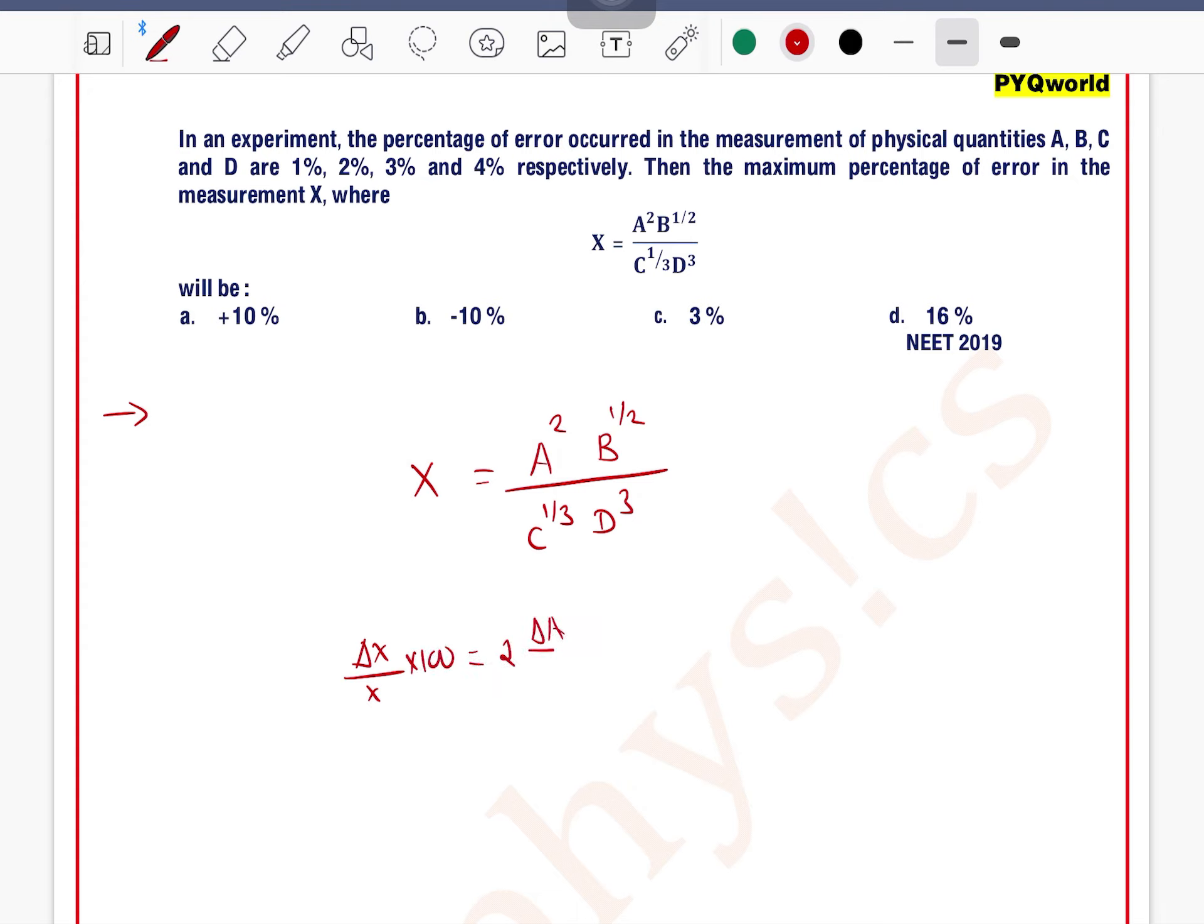So percentage error in X can be written as equal to 2 times percentage error in A plus 1 by 2 percentage error in B